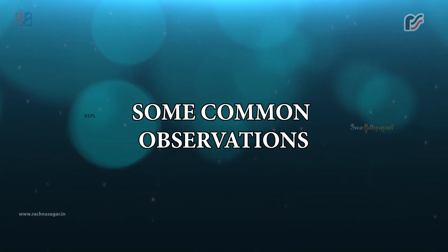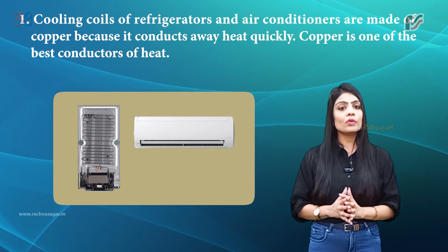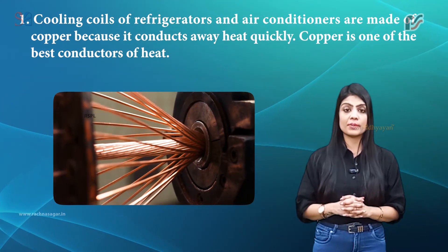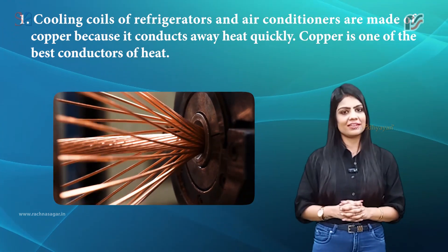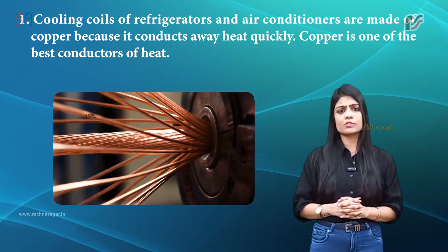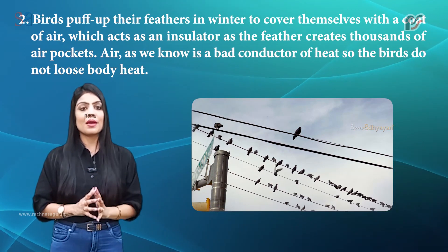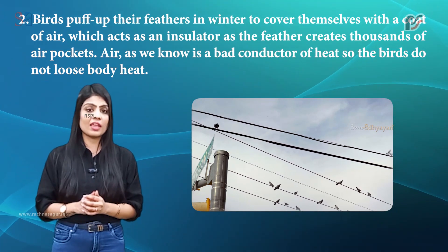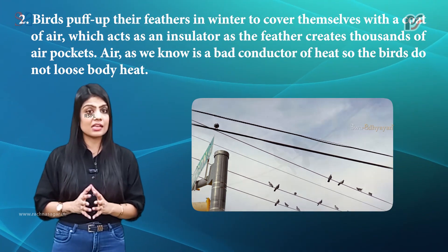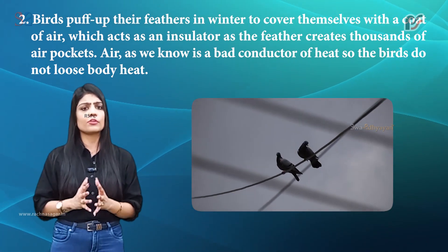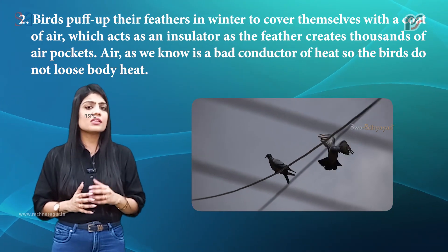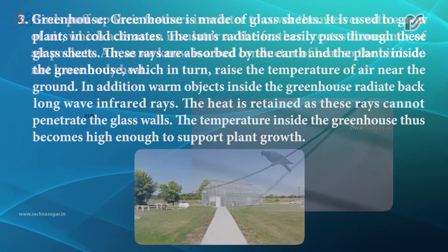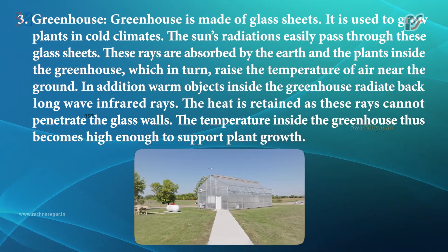Some common observations: Cooling coils of refrigerators and air conditioners are made of copper because it conducts away heat quickly — copper is one of the best conductors of heat. Birds puff up their feathers in winter to cover themselves with a coat of air, which acts as an insulator as the feathers create thousands of air pockets. Since air is a bad conductor of heat, birds do not lose body heat.